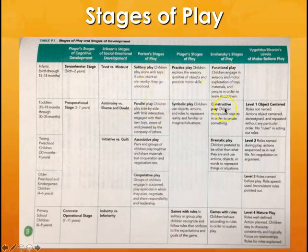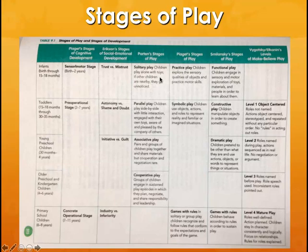Parten's stages of play include: solitary play, where children play alone with toys and may not notice other children nearby; parallel play, where children play side-by-side each with their own toys, perhaps aware of the other person and finding it pleasurable but not engaging with them; and associative play, where pairs or groups of children play together sharing materials but without cooperation or planning toward a shared end goal.